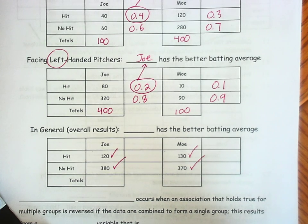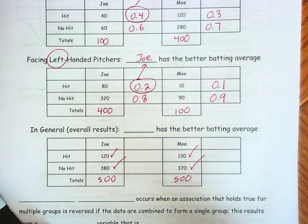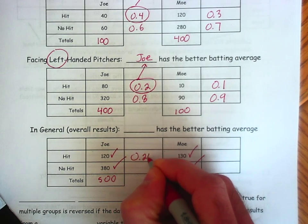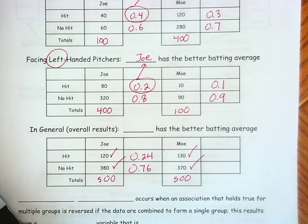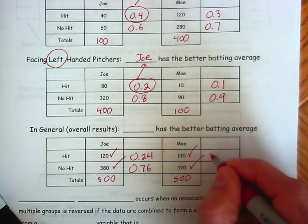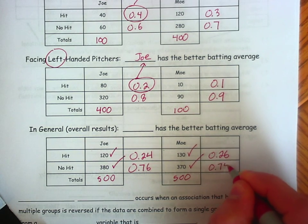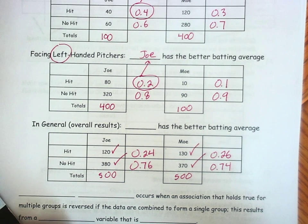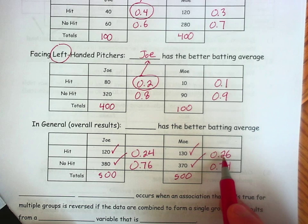Notice both of them are taking a total of 500 at-bats — that is the sum of each column. But something interesting happens here. If you calculate their conditional distributions, 120 out of 500 is 0.24, and 380 out of 500 is 0.76 to finish out the distribution. Same thing over here: 130 out of 500 is 0.26, and 370 out of 500 finishes the conditional distribution at 0.74. Now notice — here is the paradox. It is no longer Joe who has the better batting average. Joe's batting average is 0.24, Mo's is 0.26.